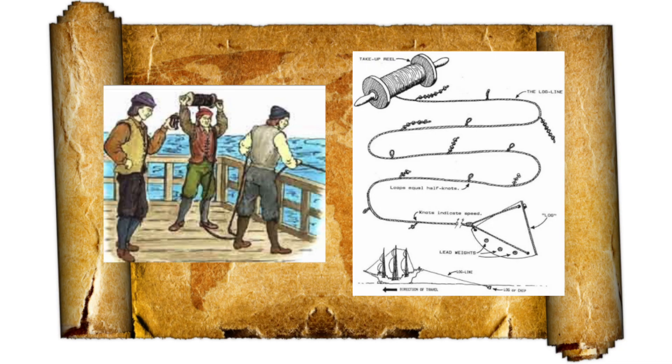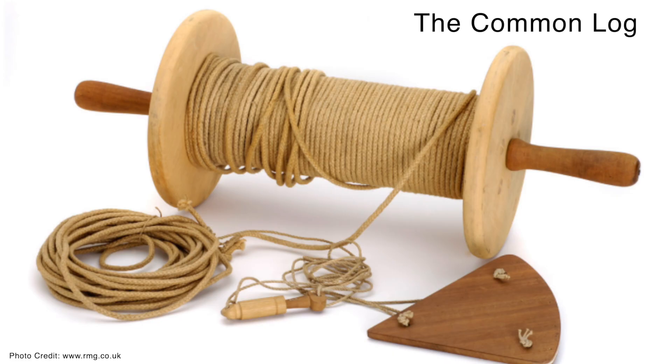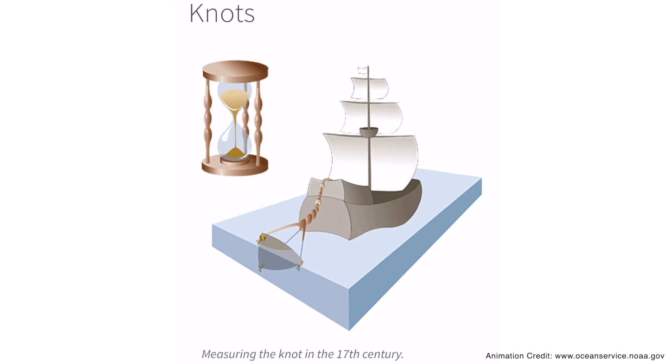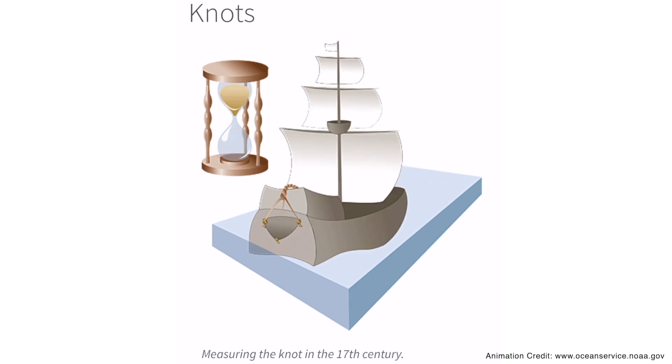Knots go back all the way to the 17th century, where it was used as a measurement on the log lines of ship logs. Sailors measured the speed of their ship using a device called the common log — a rope that had knots tied in it at specific intervals with wood attached to those knots. They would lower the rope into the water and let it float freely behind the boat for a certain amount of time, then bring the rope back in and count how many knots were left in the water to determine their speed.